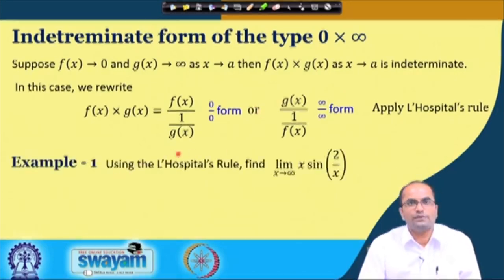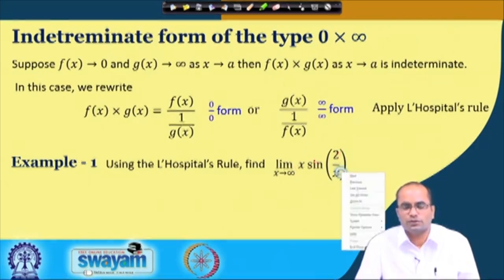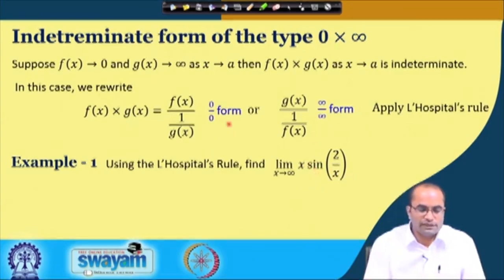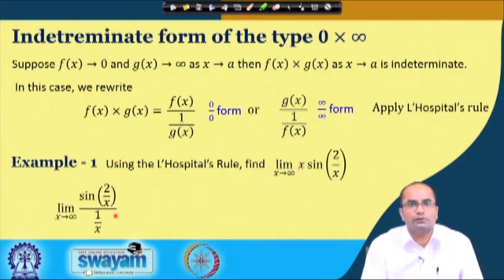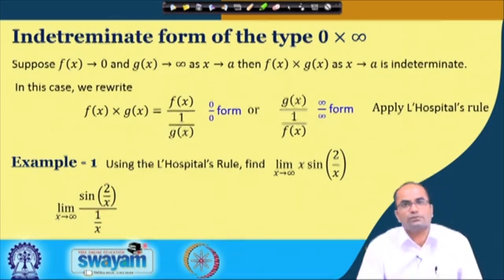Let us take a simple example: the limit as x goes to infinity of x·sin(2/x). Here x goes to infinity and sin(2/x) goes to 0, so this is an infinity times 0 form. We bring x to the denominator as 1/x, giving sin(2/x) divided by 1/x — a 0/0 form.